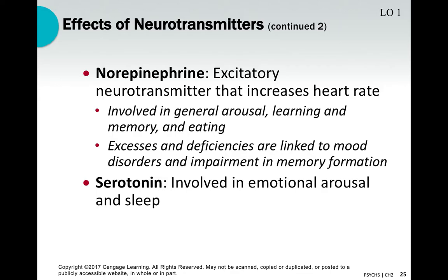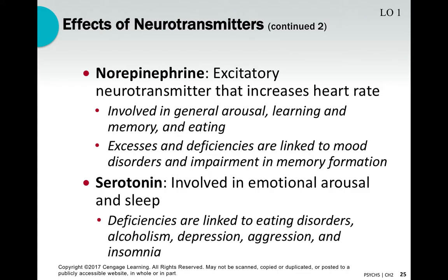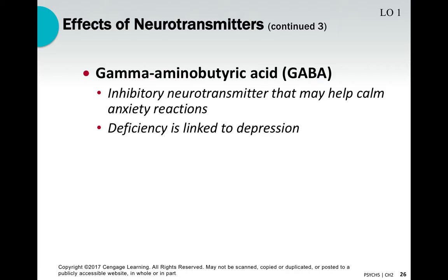Serotonin is linked to emotional arousal. Many drugs designed to treat depression and anxiety regulate serotonin. Deficiencies are linked to eating disorders, alcoholism, depression, aggression, and insomnia, so serotonin is really important to keep in balance. GABA is an inhibitory neurotransmitter typically used for calming anxiety. Deficiencies in GABA are linked to depression, while having adequate GABA is a healthy way of coping with anxiety.